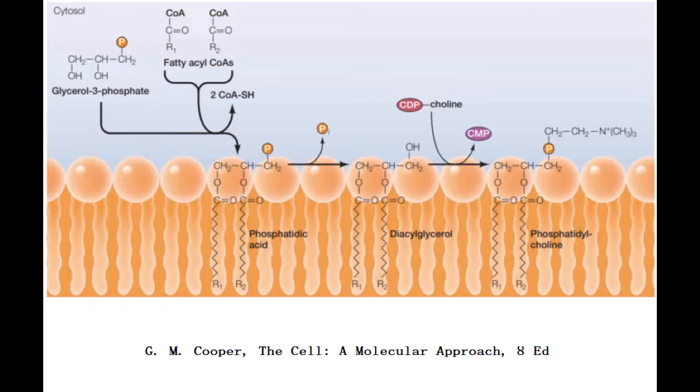A phosphatase then converts phosphatidic acid to diacylglycerol, which is converted to phosphatidylcholine by addition of a polar phosphocholine head group.